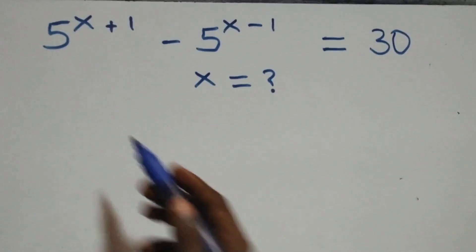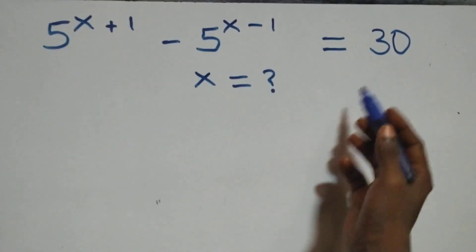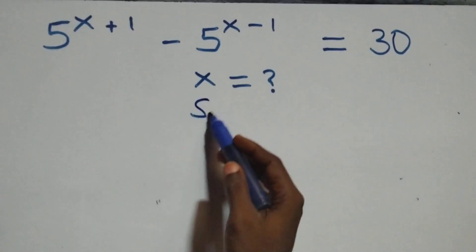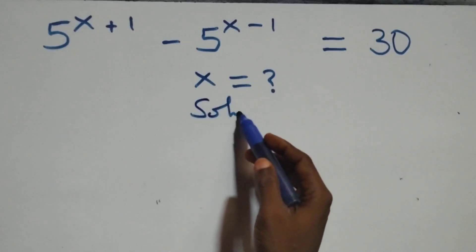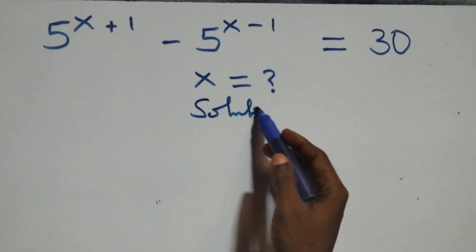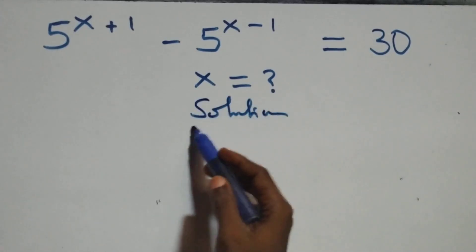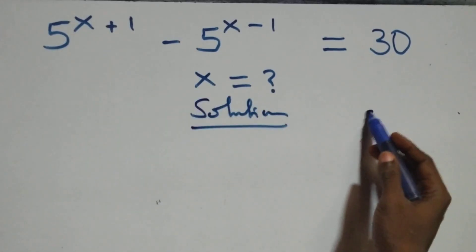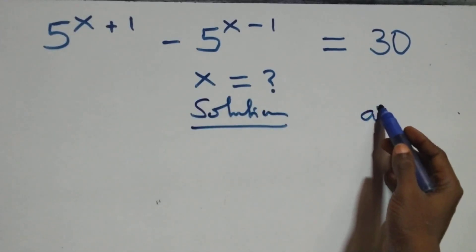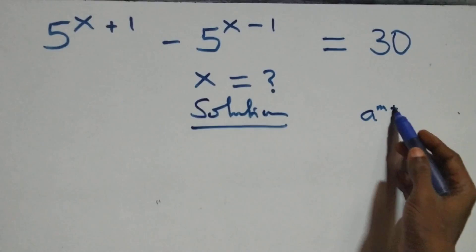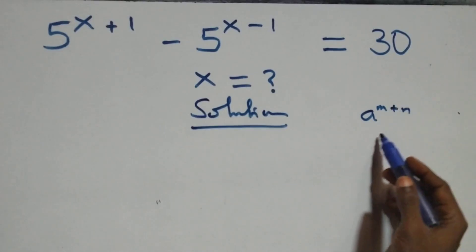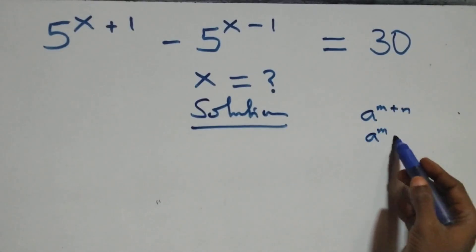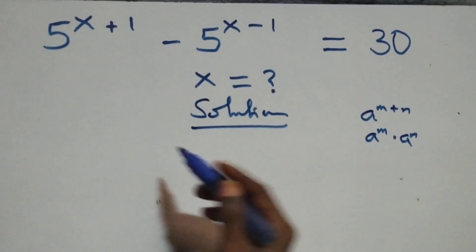Hello, you're welcome. Today we solve a nice exponential equation. We use the rule that a raised to power n plus n is the same as a raised to power n times a raised to power n.